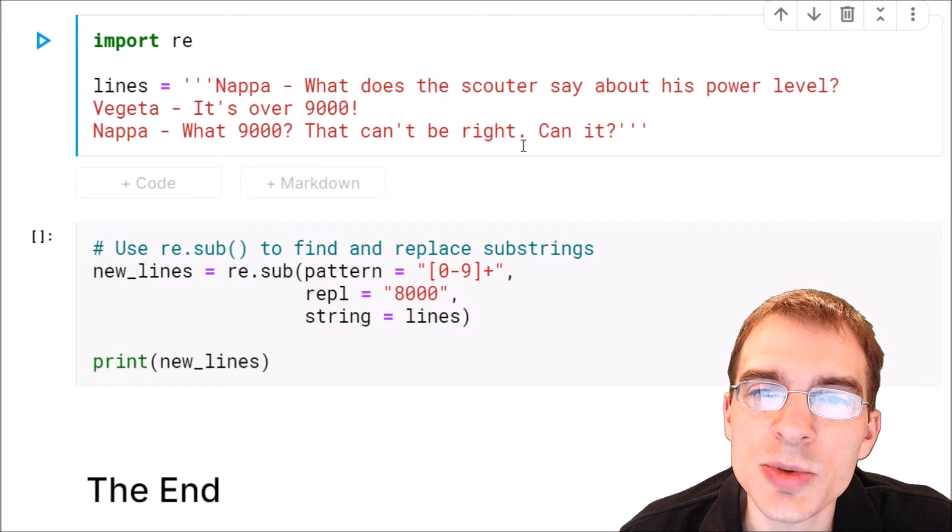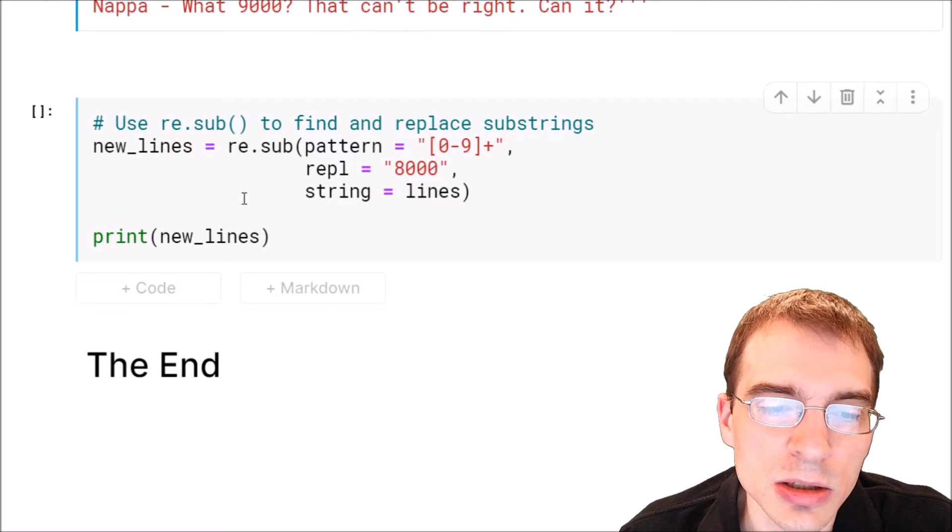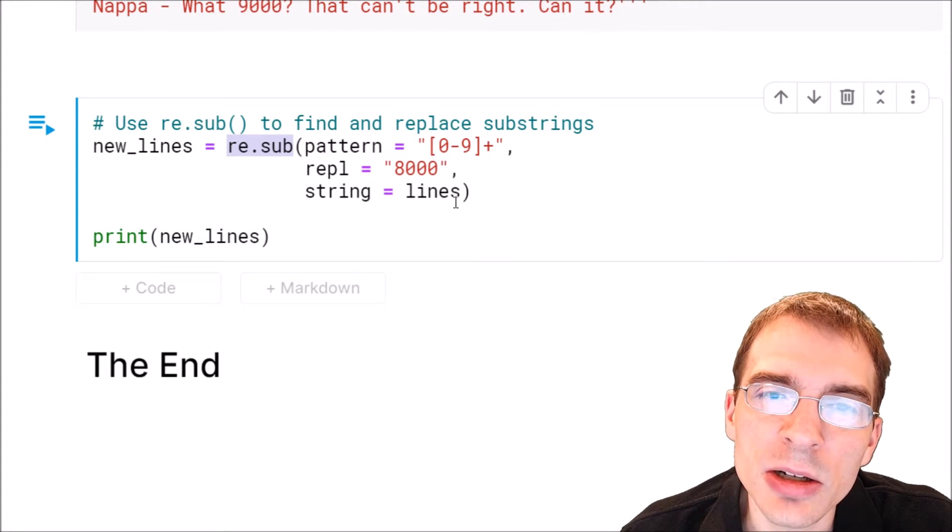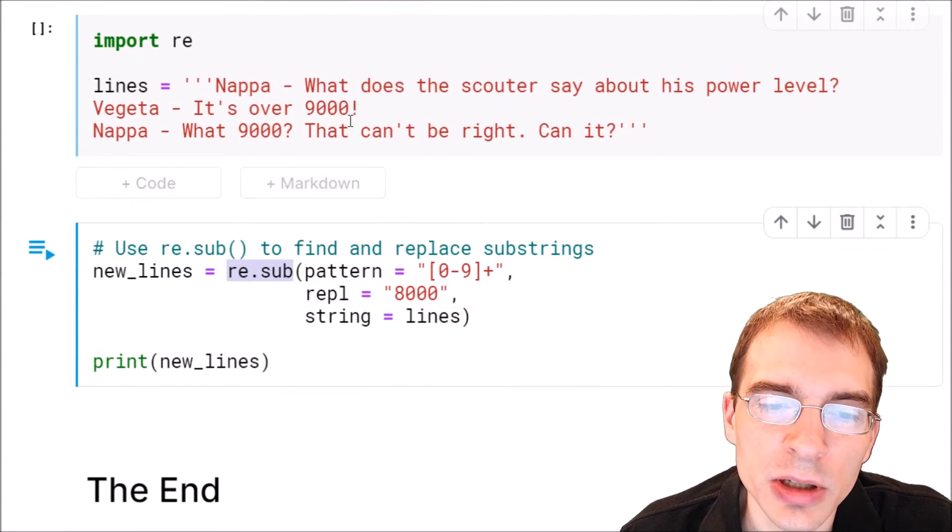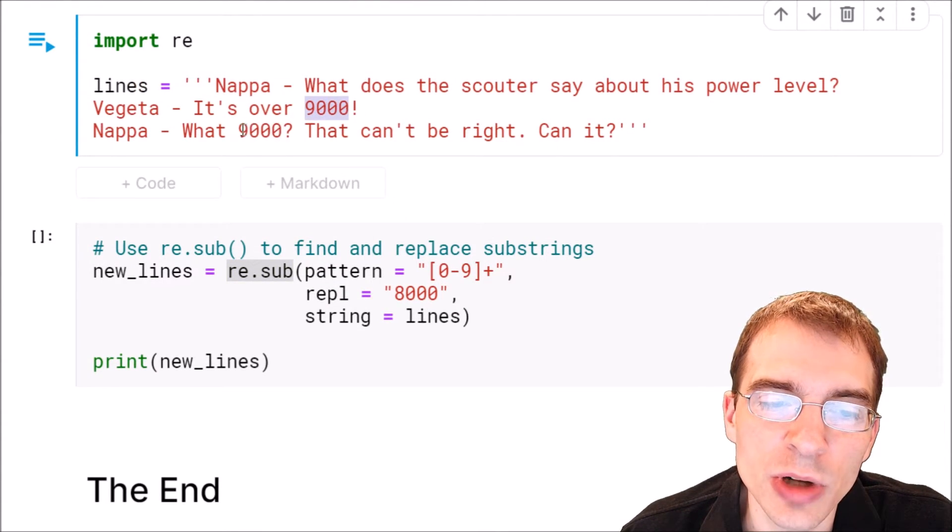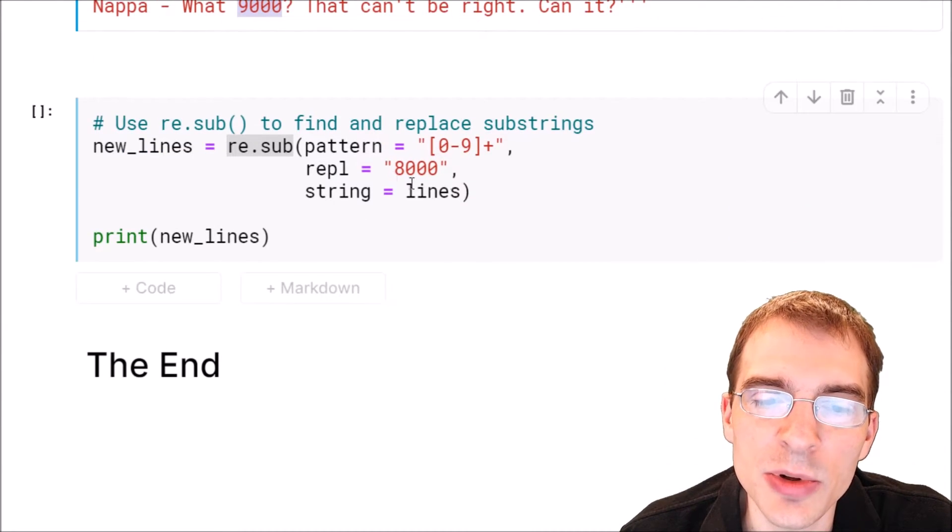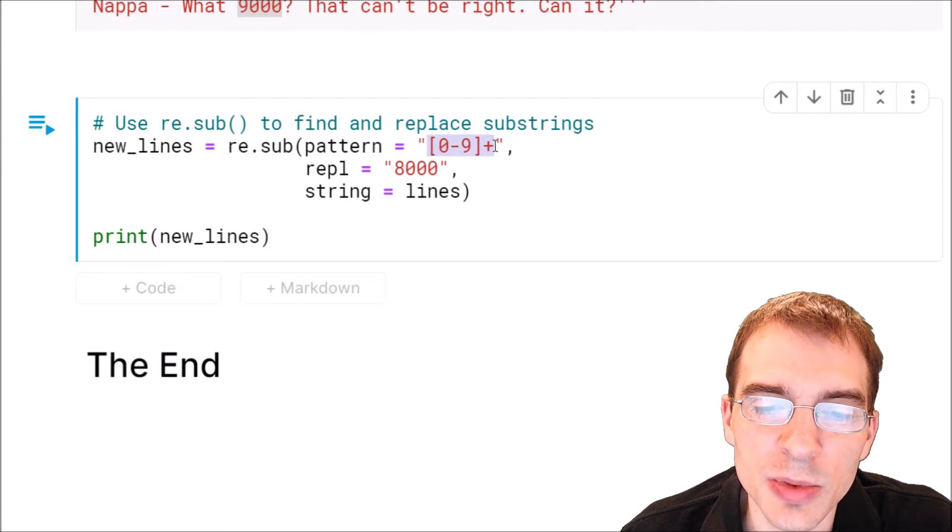To do this substitution we can use the RE.sub function within Python. So what we want to do is say RE.sub. The pattern has to match the substring that we want to replace. Well here we're just matching the two numbers that occur. So in this case we can just match purely numbers that we find. This pattern will match any numbers.